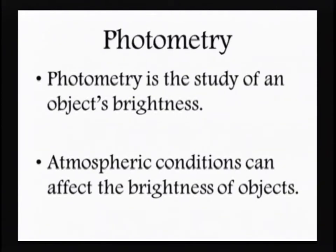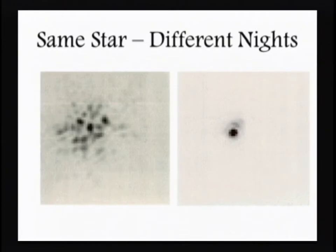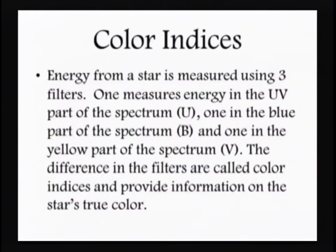Photometry is simply the study of an object's brightness. Atmospheric conditions can certainly affect the brightness of objects, so it would be ideal to do photometry outside Earth's atmosphere. This shows the same star on different nights — on the right, the atmosphere isn't moving much, giving a nice clean image. On the left, there's a lot of atmospheric motion and possibly clouds spreading the light. The right is a much better night to observe.